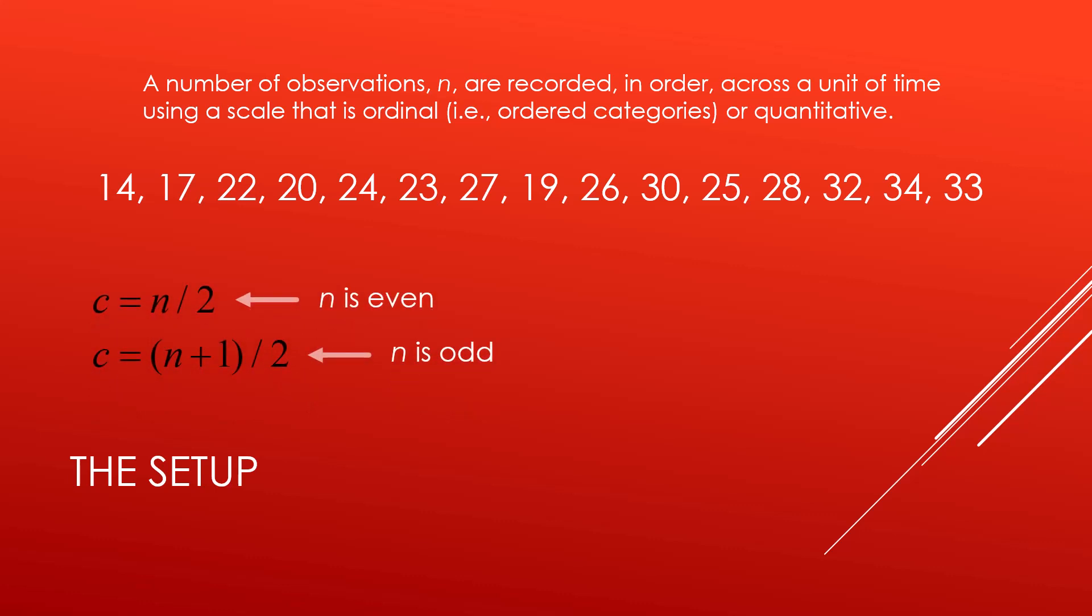In order to conduct the test we are going to first calculate a value which I will call C, that is the number of time periods in which we took measurements divided by 2 if n is even, or the number of time periods plus 1 divided by 2 if n is odd. In the current example we have 15 measurements, that means n is odd, so C will be 15 plus 1 or 16 divided by 2, which equals 8. We're also going to indicate X sub i as the ith measurement when the measurements are in order of time of measurement.